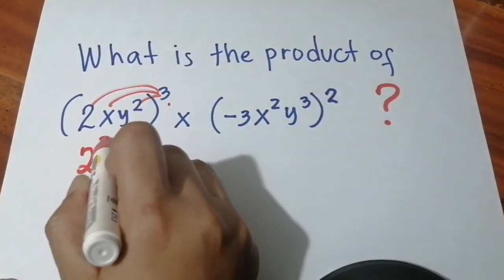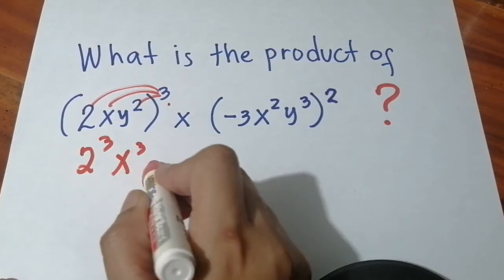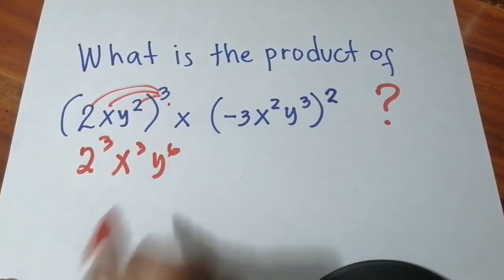Doing that, we get 2 raised to the third power, x raised to the third power, and y raised to the sixth power.